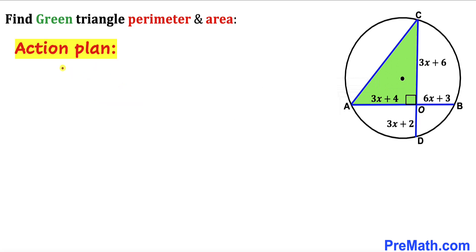Here's our action plan. Since we are interested in finding the numeric value of the perimeter and the area of this green shaded right triangle AOC, we must find the value of x first.